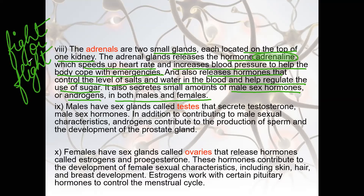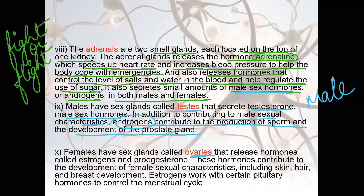Next are the gonads — testes and ovaries. Testes secrete testosterone, a male sex hormone. In addition to contributing to male sex characteristics, androgens — which are the male sex hormones — contribute to the production of sperm and the development of the prostate gland.